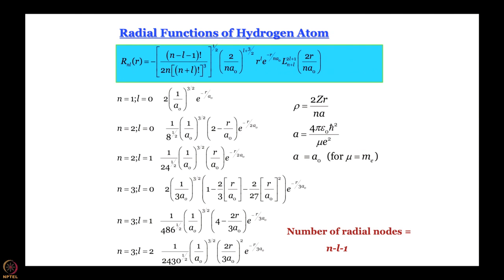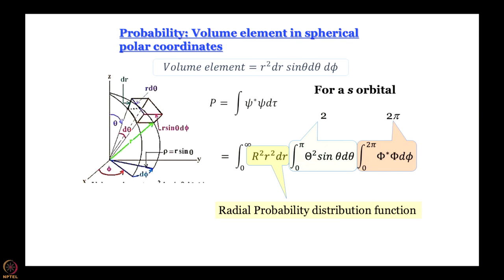We have already talked about radial functions. The number of radial nodes is n − l − 1. A very important concept is that of radial probability density — we must consider the volume element written in spherical polar coordinates when talking about probability distribution. It is not enough to consider just R²; you must consider R² multiplied by r² to understand the probability density along a radius. In this module we only want to talk about s orbitals, which have no contribution from the theta and phi parts.